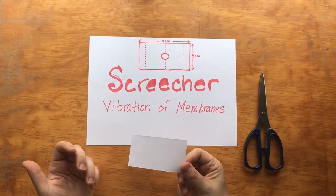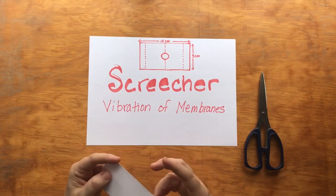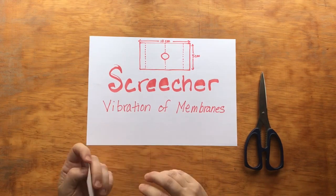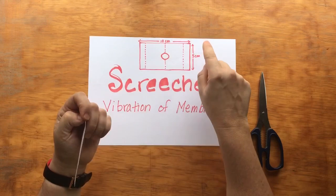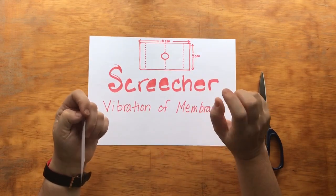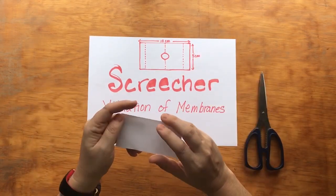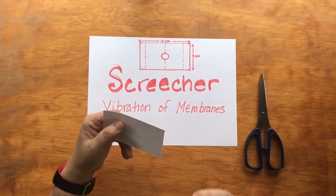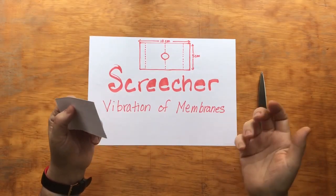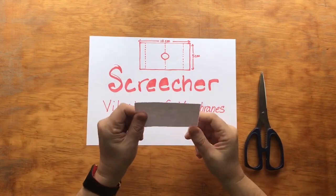For those of you in the United States who do not use the metric system, that could be about 4 inches long and 2 inches in width — however you want to look at it. So 4 inches by 2 inches, or 10 centimeters by 5 centimeters, is fine.